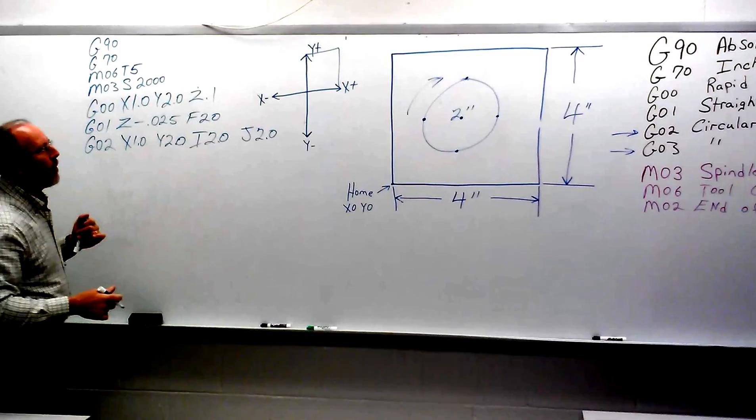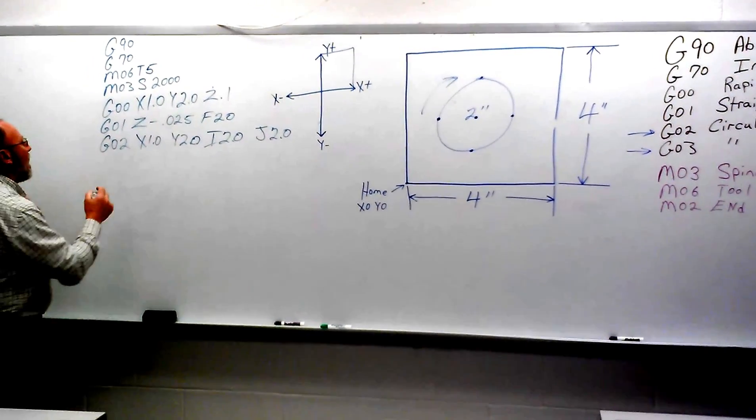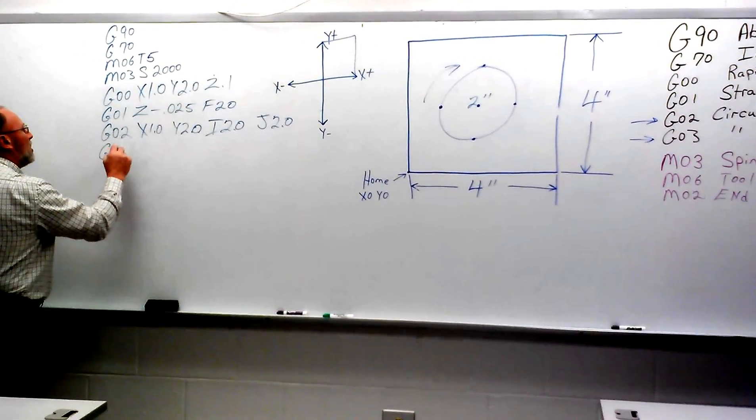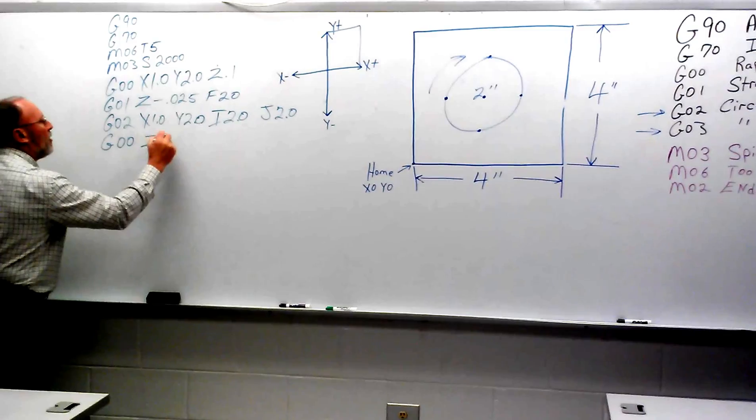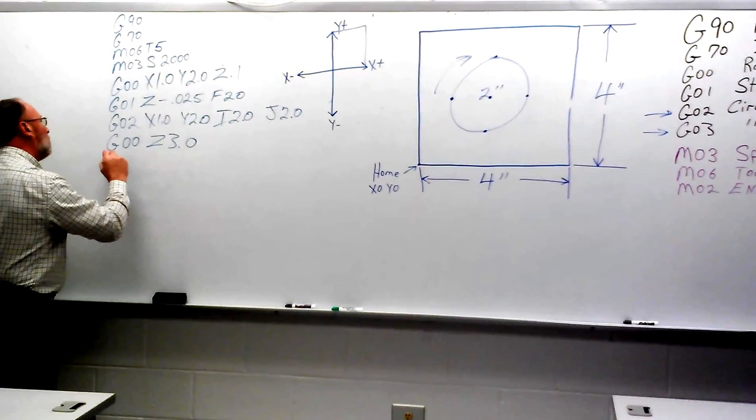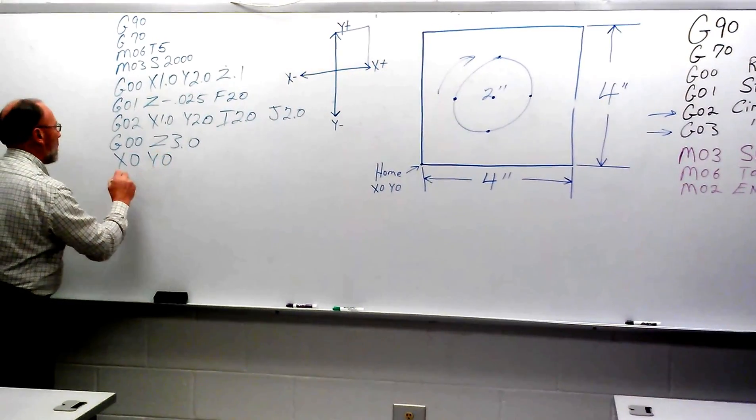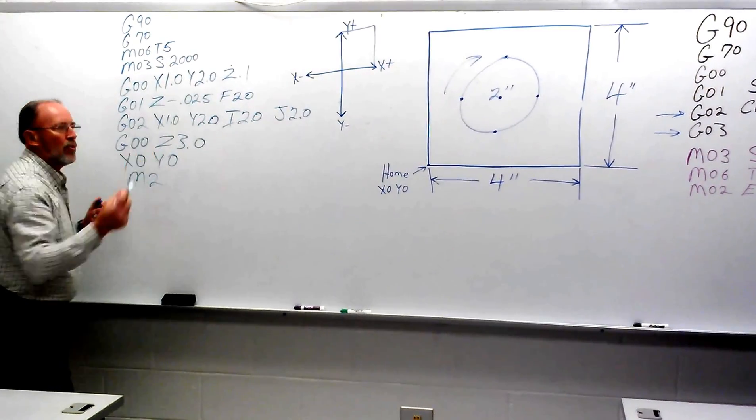We just made a complete circle. We finished the circle out. We're through with that. Pick the tool up, G00, Z3.0. X goes home, Y goes home with it, and M2 ends the program.